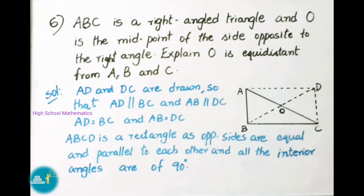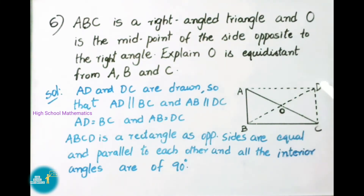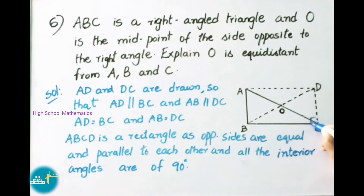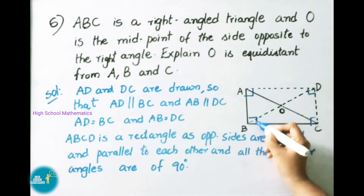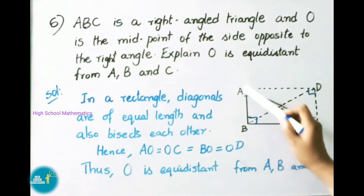After drawing dotted lines, we extend the figure so that AD is parallel to BC and AB is parallel to DC, making ABCD a rectangle. Why? Because opposite sides are equal and parallel to each other, and all interior angles are 90 degrees. We know in a rectangle the diagonals are of equal length and they bisect each other. Hence AO equals OC and BO equals OD. Thus O is equidistant from A, B and C.